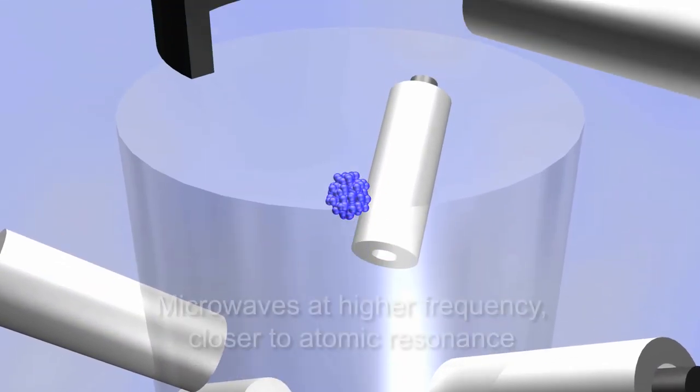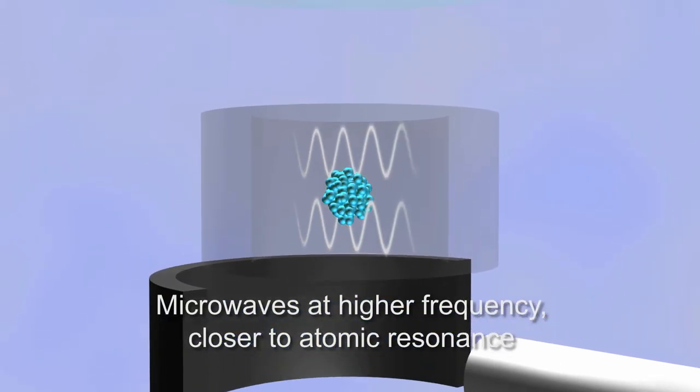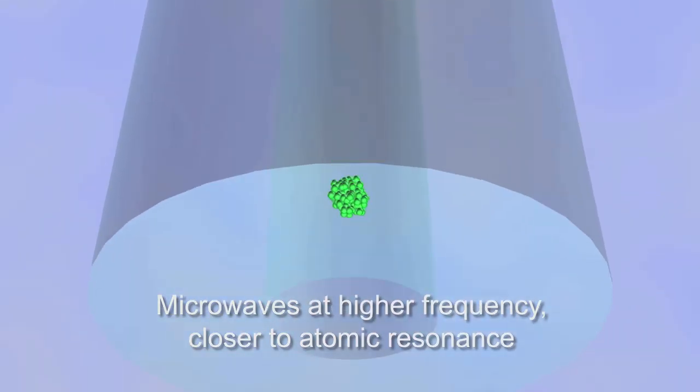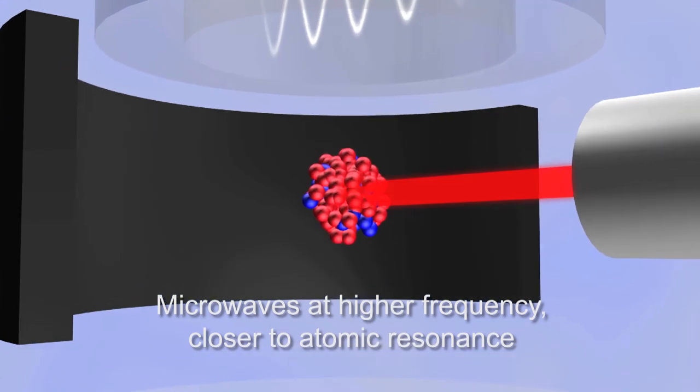Within the clock, the cesium atoms make two passes through a microwave chamber. If the frequency of the microwaves matches the atoms' ticking rate perfectly, their outermost electrons flip over and enter an excited state.